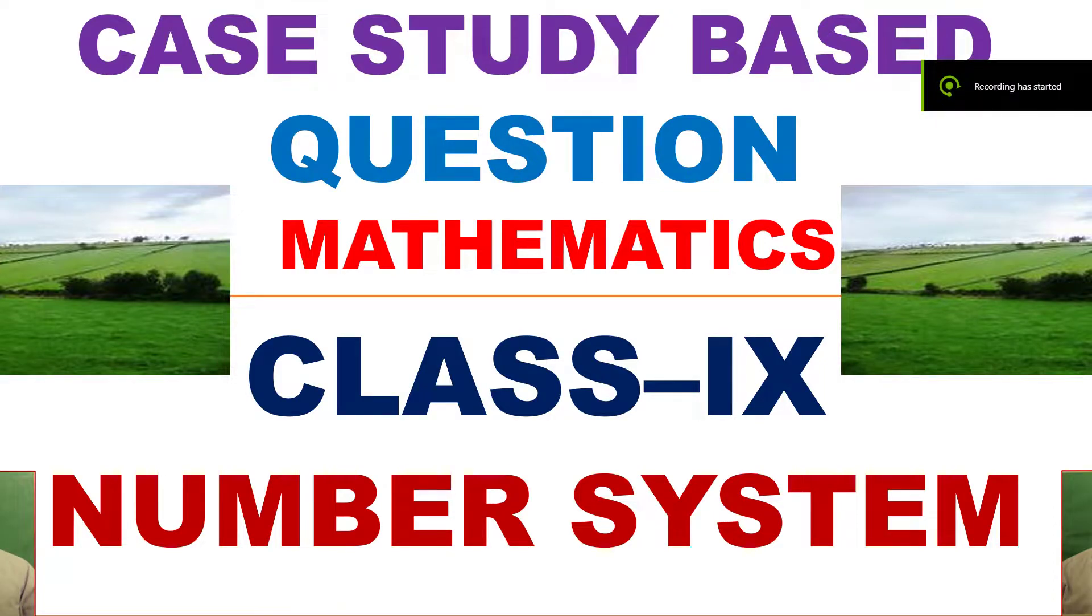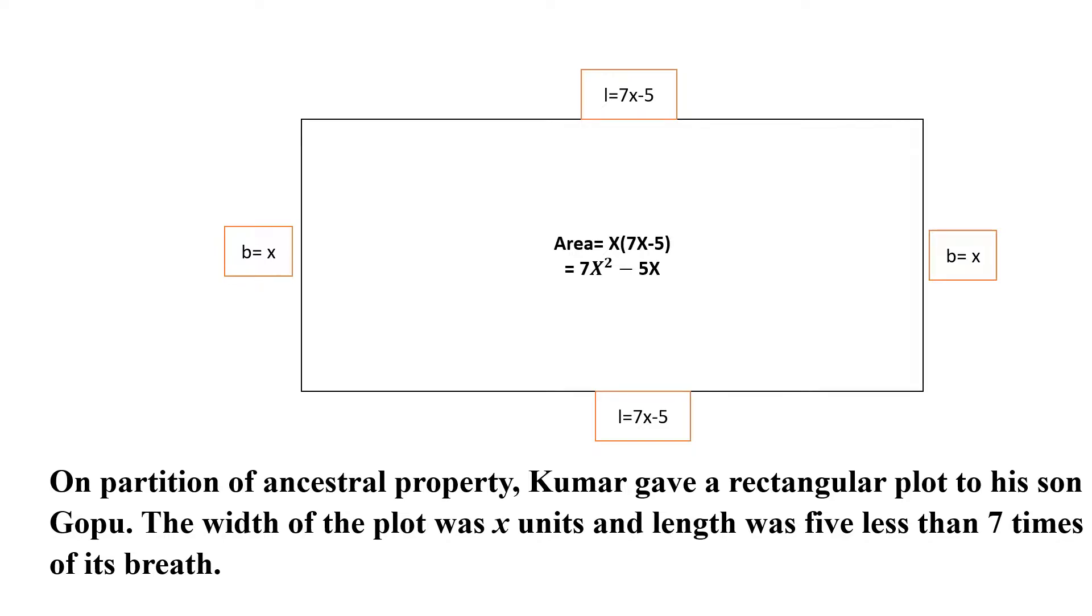Hello dear students, from the chapter Number System, this is a case study based question in mathematics for Class 9. So let's start the question. The question is on partition of ancestral property. Kumar gave a rectangular plot to his son Gopu.